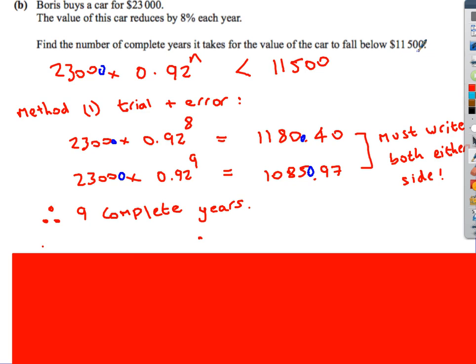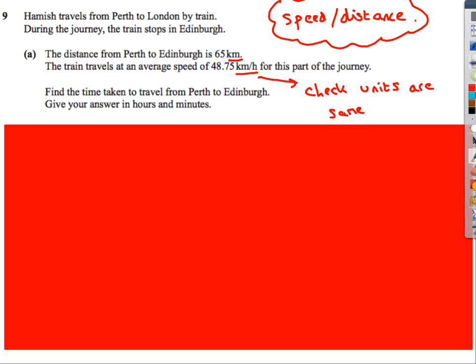And then when there's 9 years, we do 23,000 times by 0.92 to the power of 9, and that gives us 10,850. There we go, it's fallen below 11,500. And it says the number of complete years. After 8 years, it was above. Therefore, it took 9 complete years in order to fall below 11,500. But you've got to read the question carefully on this one. It would be 9 years.